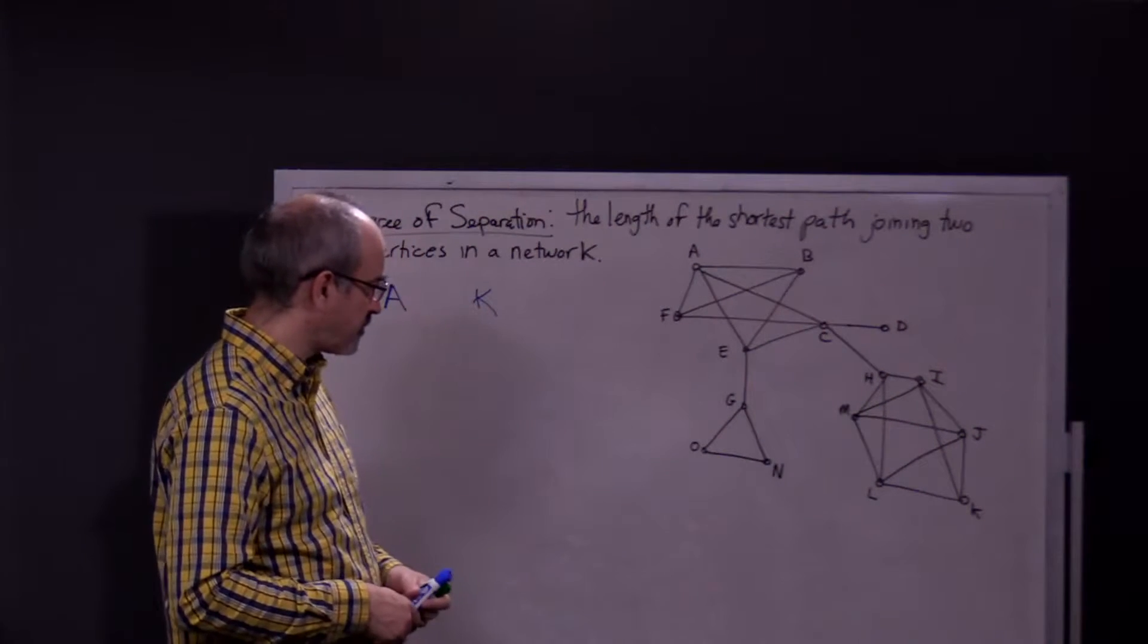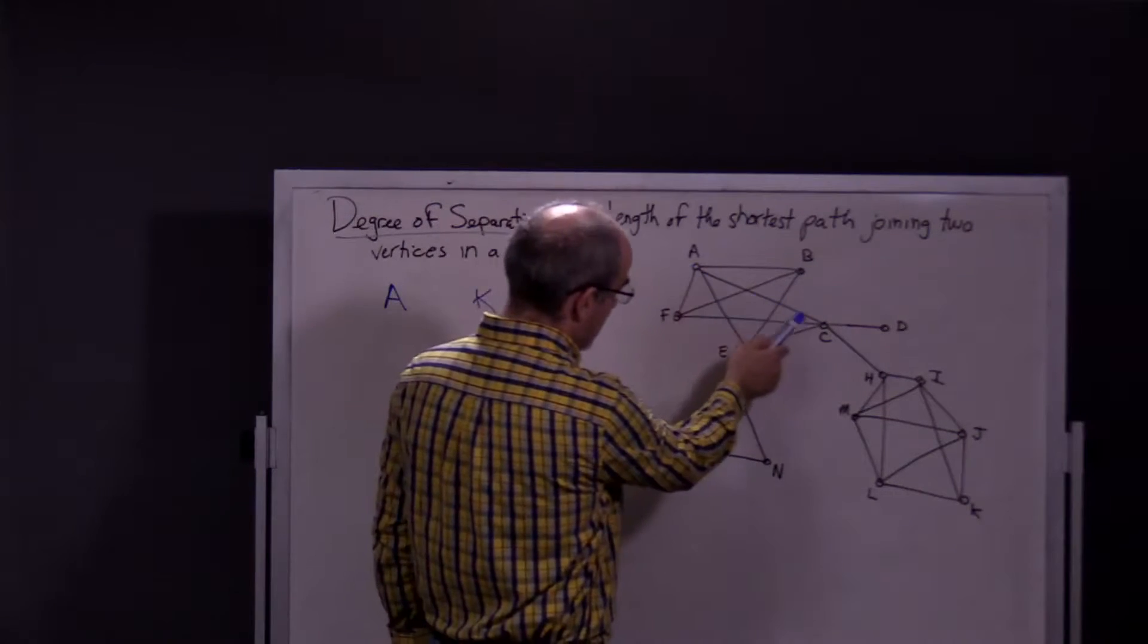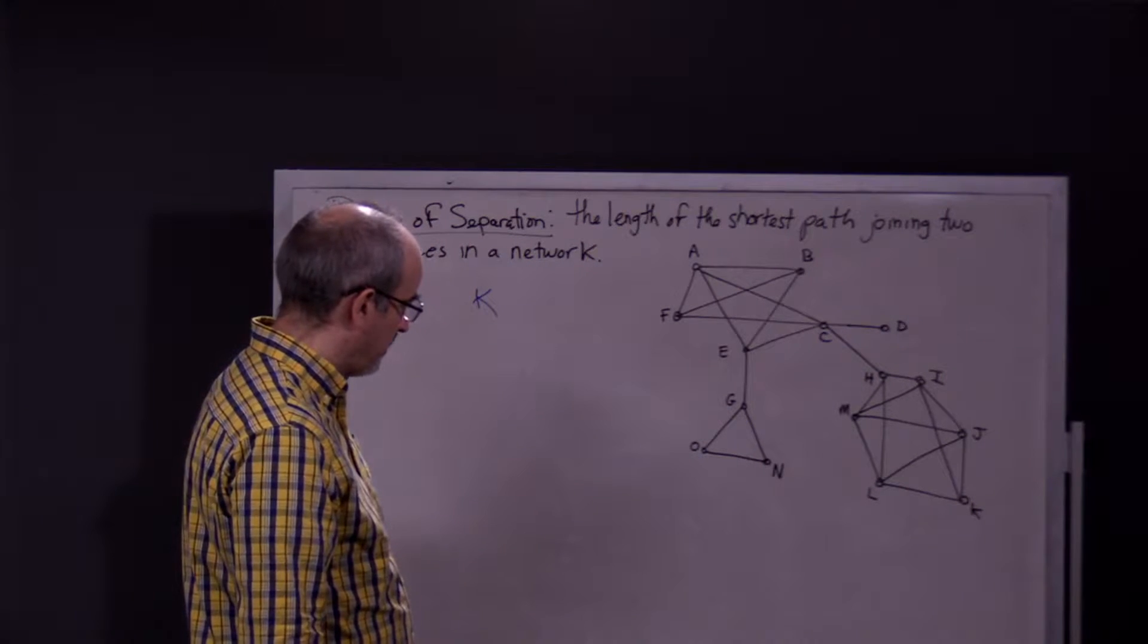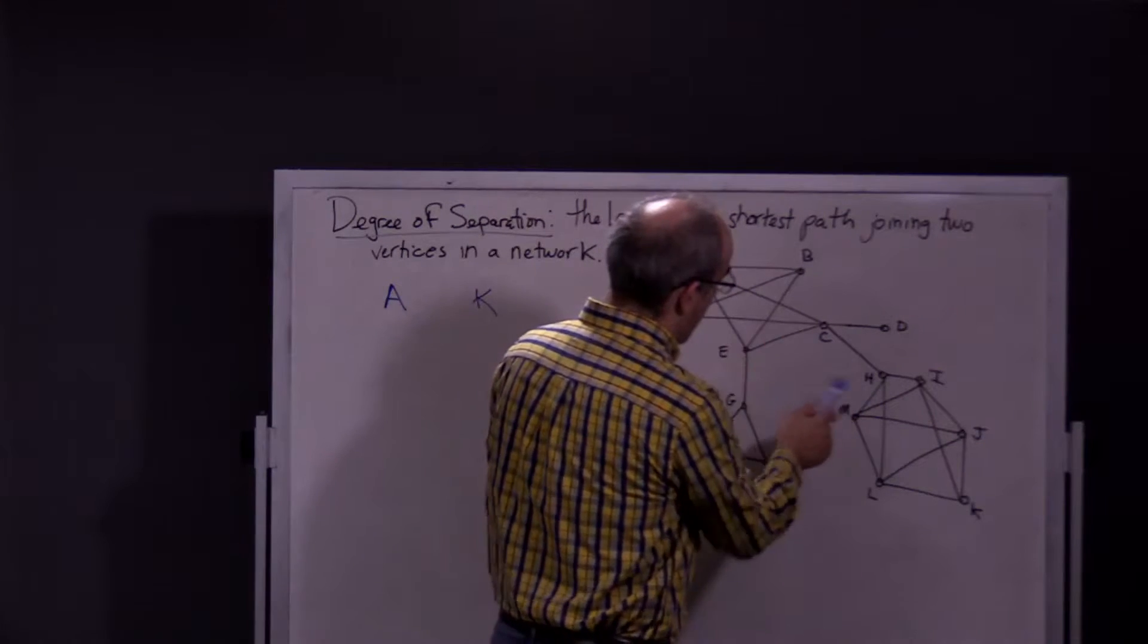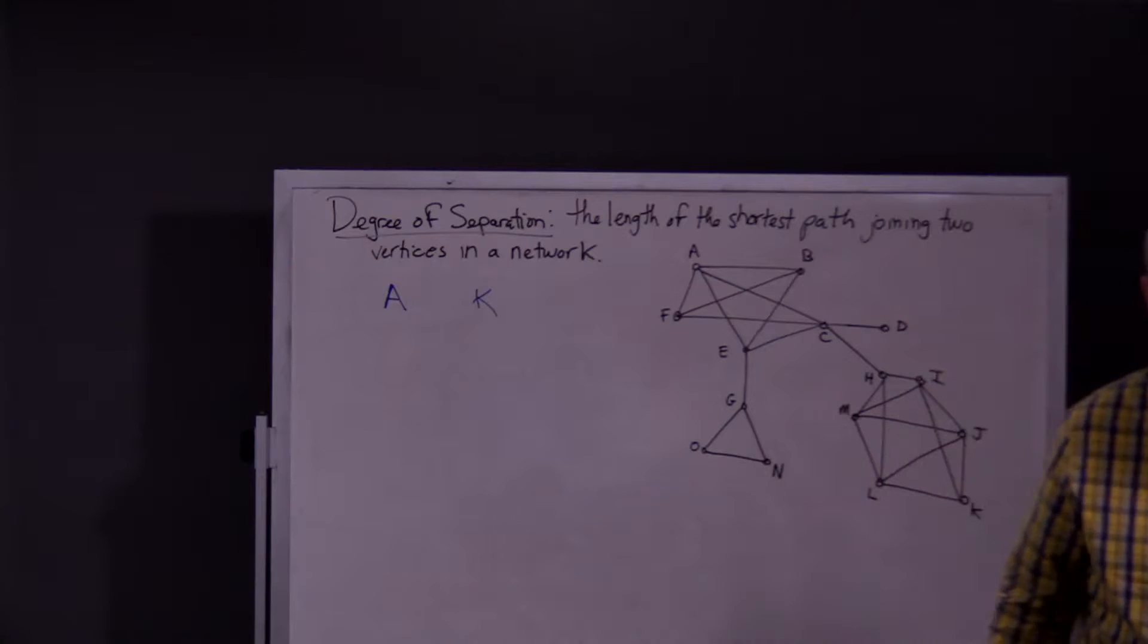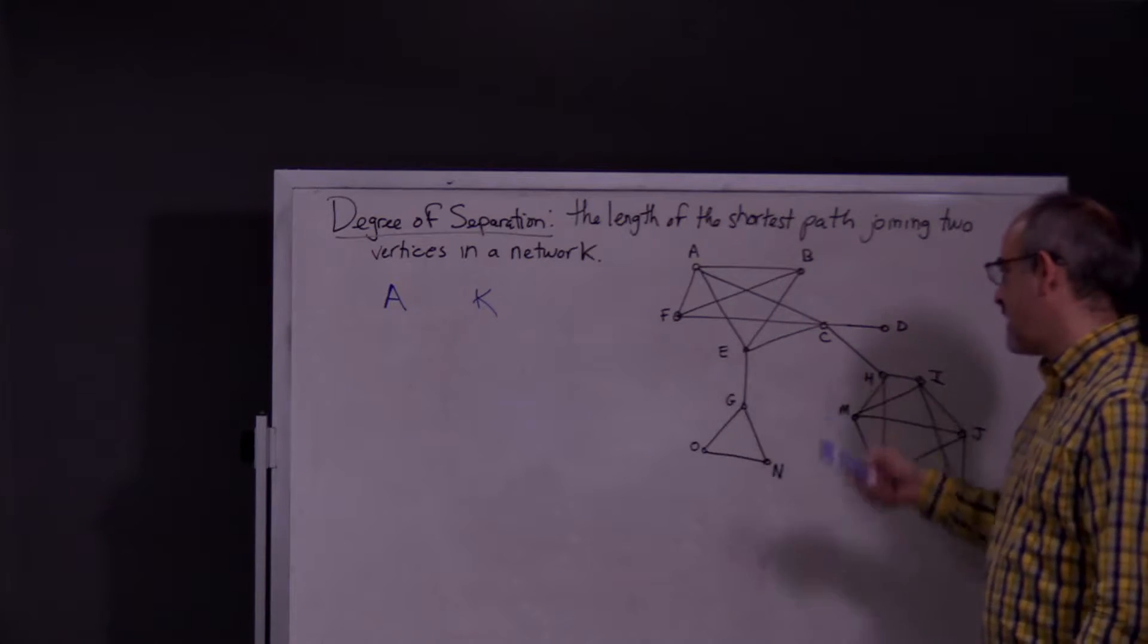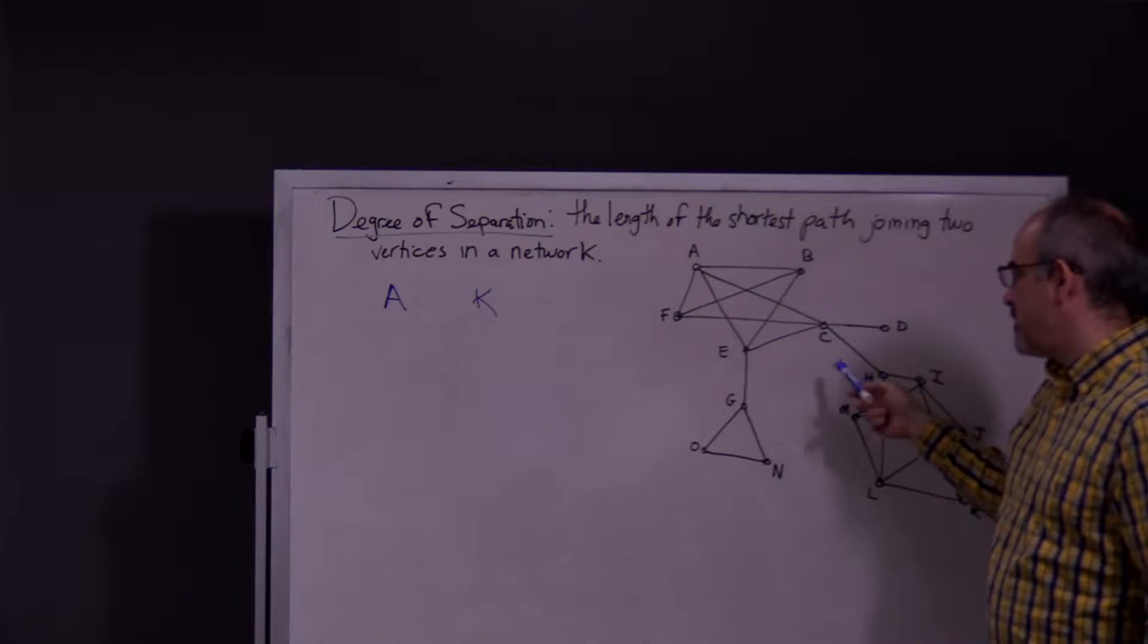So A and K, to me it looks like I could go from A to C, C to H, and so far I have two. From there, so from A to H, definitely the shortest route or shortest distance or the degree of separation between A and H would definitely be two. There's no other route that would be quicker to get to H.